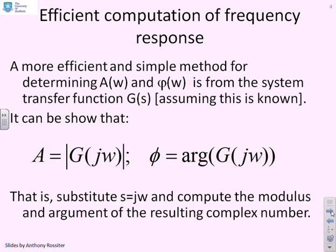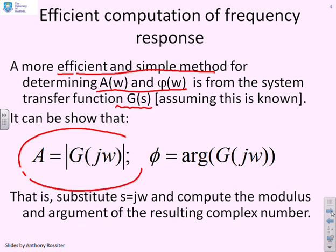A more efficient and simple method for determining A and φ, assuming you know a transfer function model for the system, is to use these formulas: A is the modulus of G(jω) and φ is the argument of G(jω). In other words, simply substitute s = jω into G(s), and A is the modulus and φ is the argument of that complex number.